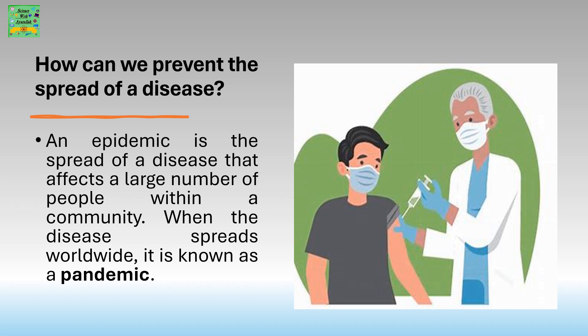How can we prevent the spread of a disease? An epidemic is the spread of a disease that affects a large number of people within a community. When the disease spreads worldwide, it is known as a pandemic.